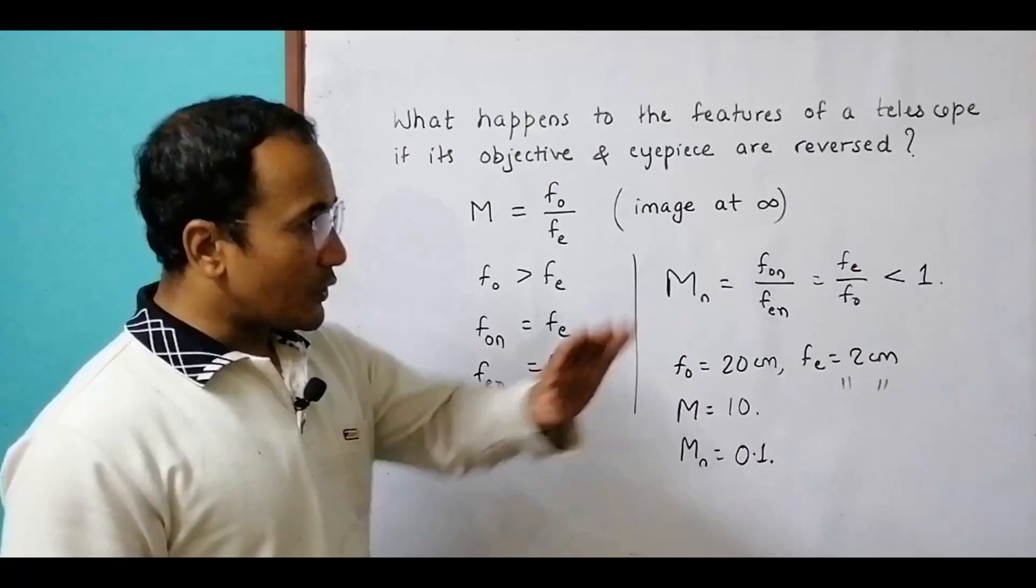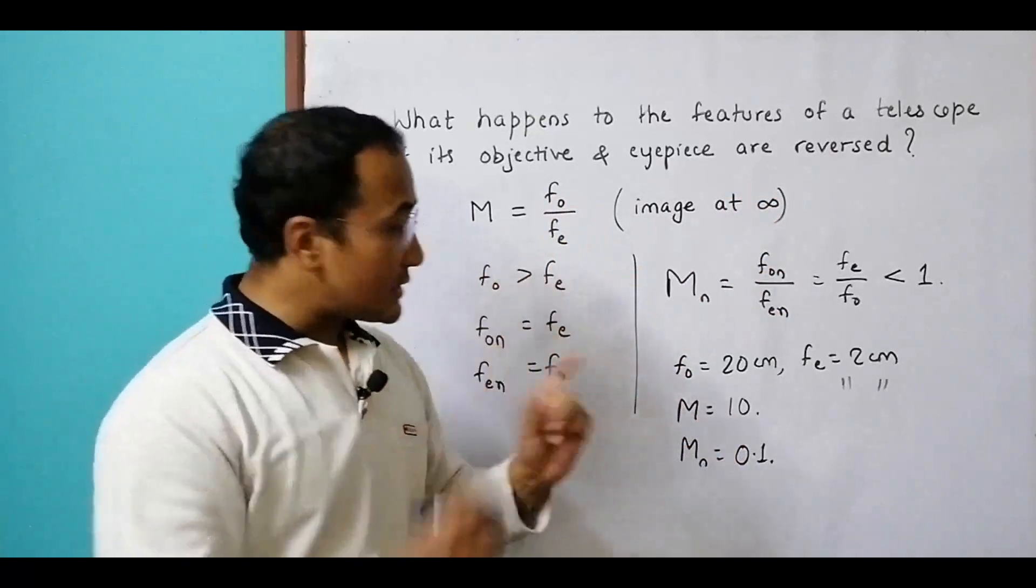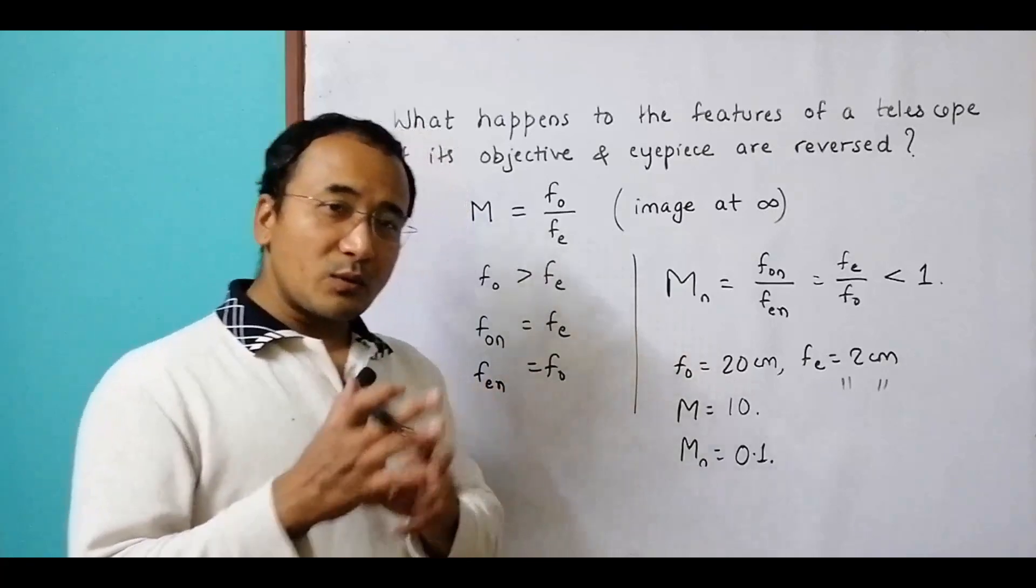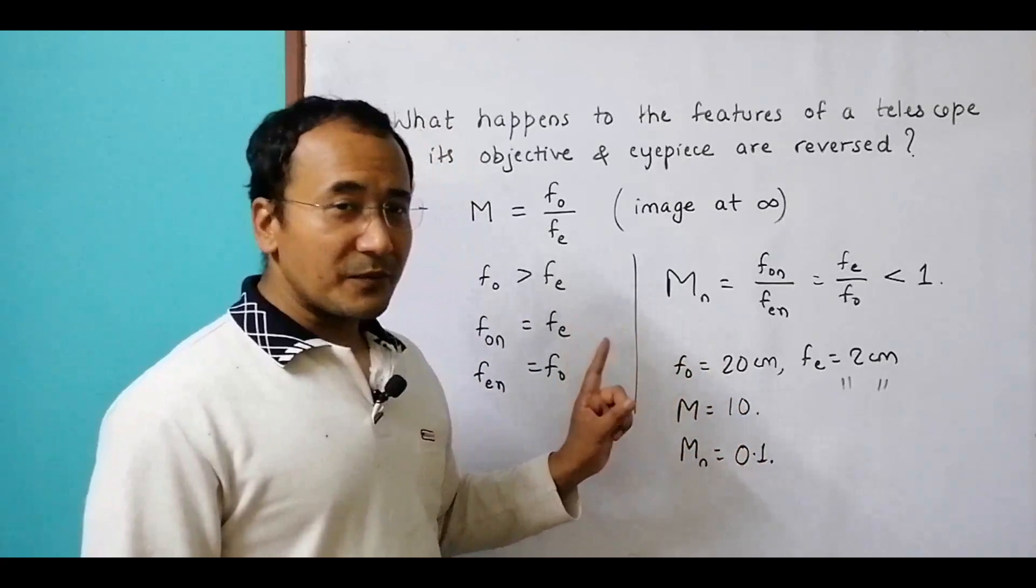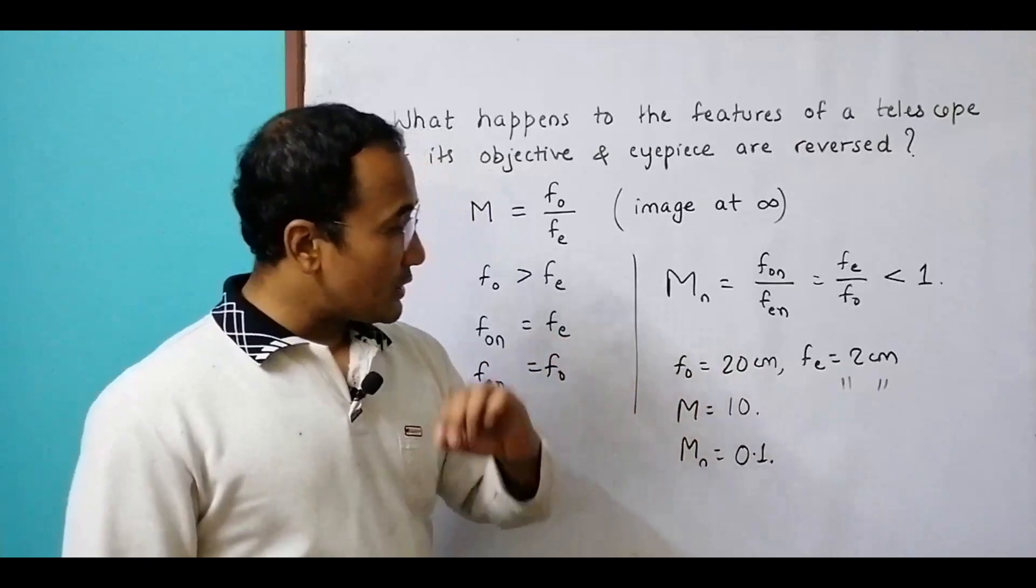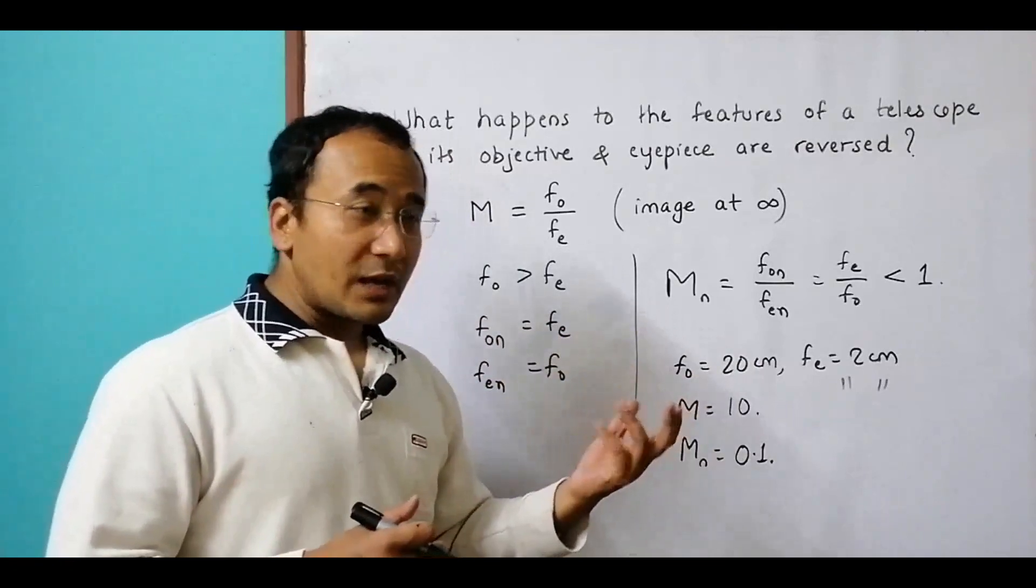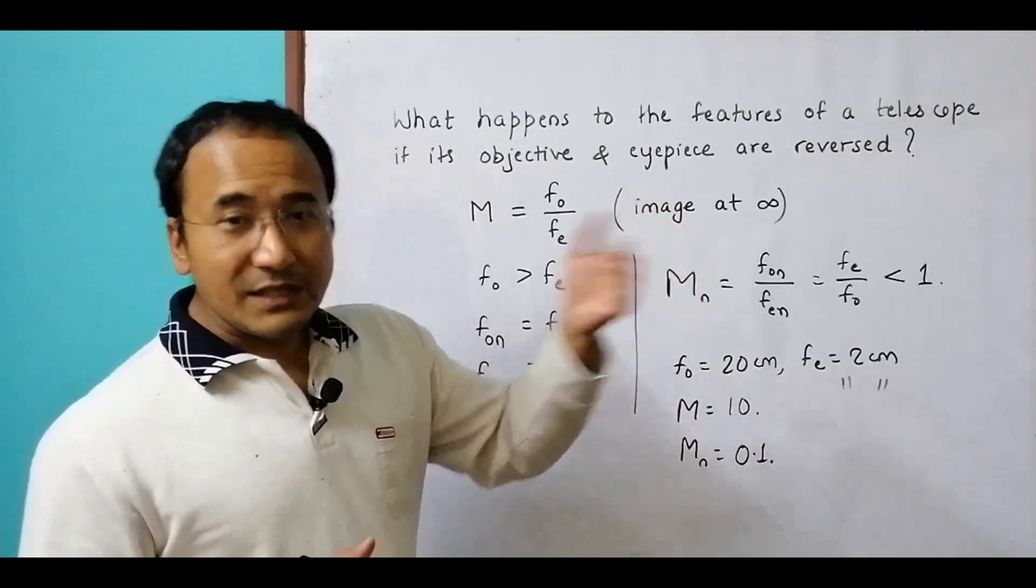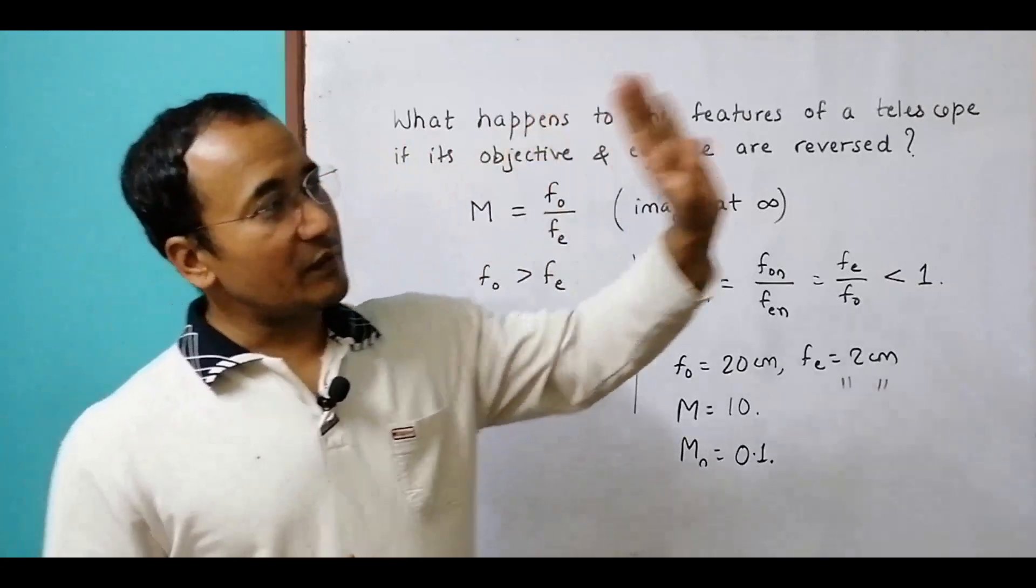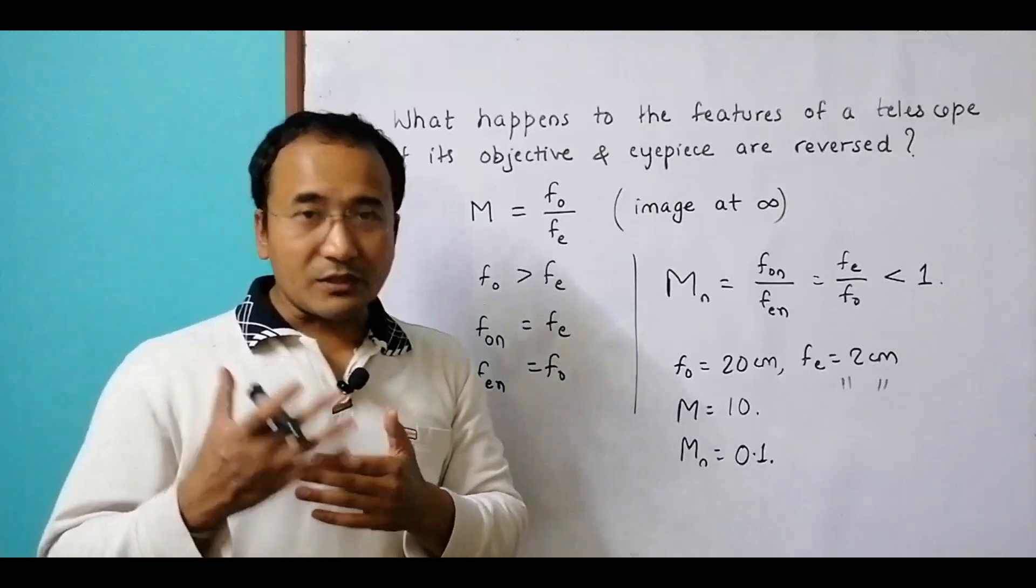Actually what happens is normally the telescope makes it 10 times, but the reverse makes it 0.1. So instead of 10 we are getting 0.1. That means 0.1 is 100 times less than 10. We expected 10 and we are getting 0.1, which means 100 times less. That's why things appear very, very far away.